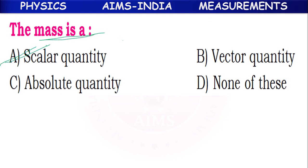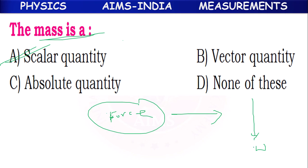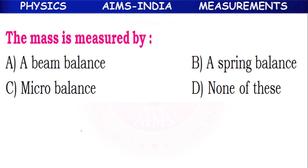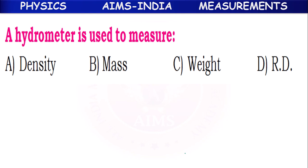Mass is a scalar quantity. Force and weight act in one direction and have direction, but mass has only magnitude — no direction — so it is a scalar quantity. Mass is measured by beam balance.